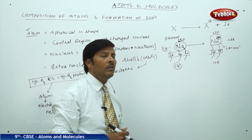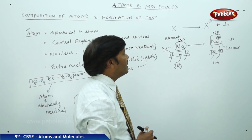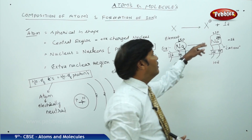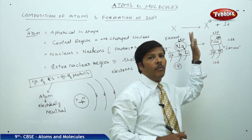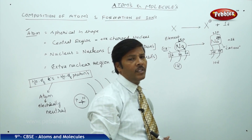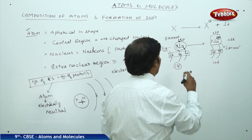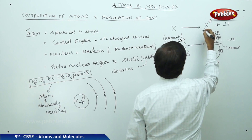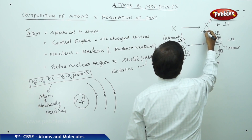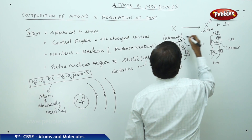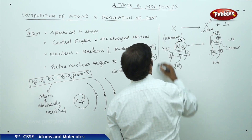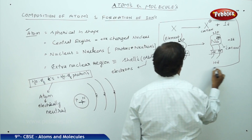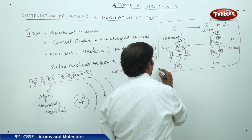When an atom loses an electron and acquires one unit of positive charge, that positively charged species is called the cationic species. The neutral element has become a cation because it is now carrying a positive charge.